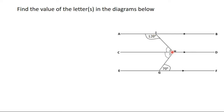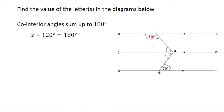You can see from here that 120 degrees and X are co-interior angles. If you watched the previous video, you'll recall that co-interior angles add up to 180 degrees. So X plus 120 degrees equals 180 degrees, and X equals 60 degrees.